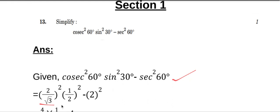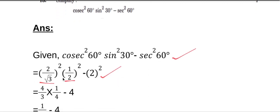So sin²30° = (1/2)² - sec 60° = 2. Therefore sec²60° = 2² = 4, and simplifying (2/√3)² = 4/3.